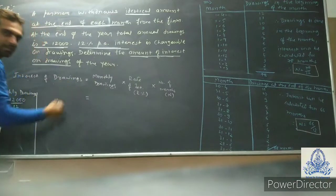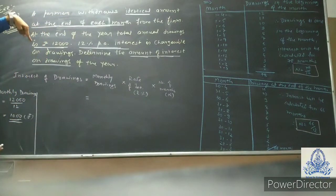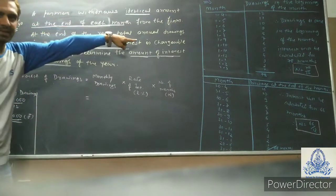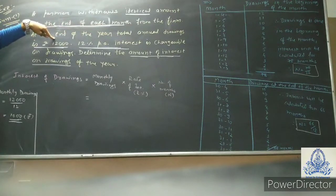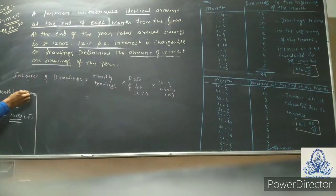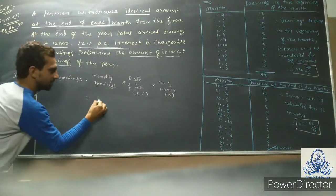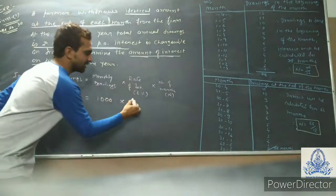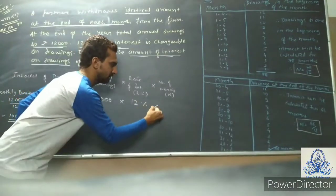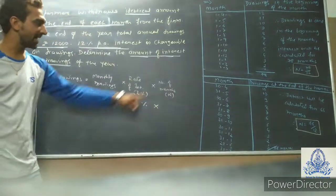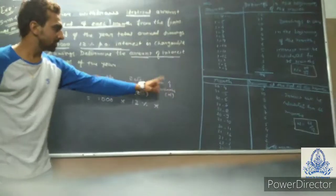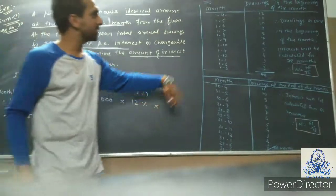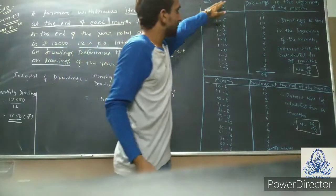Annual drawings — that means yearly drawings — is given as 12,000. So first we have to convert into monthly drawings. Monthly drawings = 12,000 ÷ 12 = 1,000. So I am writing here: 1,000 × rate of interest, which is 12%, × number of months. Now let's see how the number of months will be calculated.